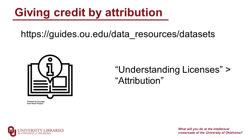Let's go to our data resources research guide at this link. In the box titled Understanding Licenses, you'll see a header called Attribution. The first two are examples of Creative Commons license attribution. In particular, there's an attribution generator where you can put in the title of the work that you're using and how you're using it, and get an attribution statement out.